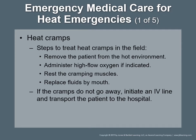Emergency medical care for heat cramps: remove the patient from the hot environment, administer high-flow oxygen if indicated, rest the cramping muscles, replace fluids by mouth, and cool the patient with water spray or mist, adding convection by fanning. When the heat cramps are gone the patient may resume activity, though heavy sweating may cause cramps to recur. The best preventive and treatment strategy is hydration. If cramps do not resolve, initiate an IV line and transport. If uncertain that cramps were caused by heat or anything seems out of the ordinary, contact medical control or transport to the hospital.